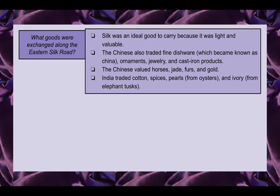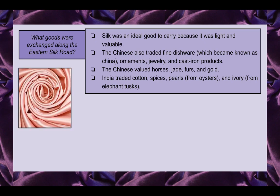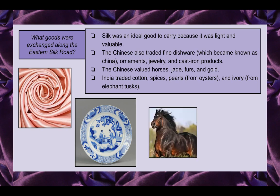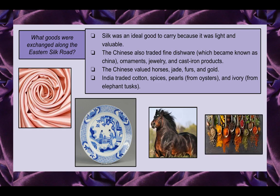What goods were exchanged along the eastern Silk Road? Silk was an ideal good to carry because it was light and valuable. The Chinese also traded fine dishware — known today as China — as well as ornaments, jewelry, and cast iron products. The Chinese valued horses, jade, furs, and gold. India traded cotton, spices, pearls from oysters, and ivory from elephant tusks.